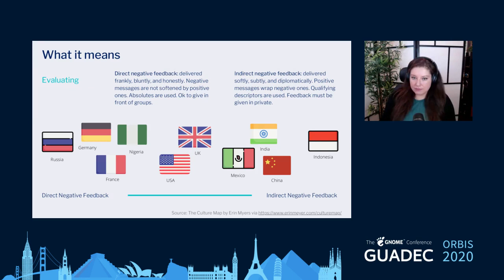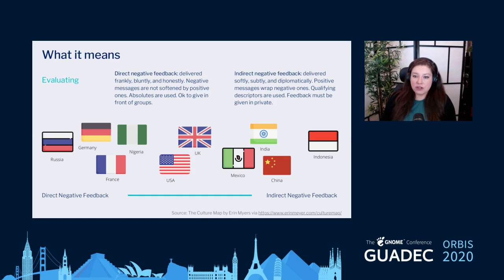Another indicator is evaluating, which is about direct negative feedback. Direct feedback cultures value delivering feedback frankly, bluntly, and honestly. They don't soften negative messages with positive ones, and absolutes are often used — phrases like 'you always do this' or 'completely.' Negative feedback is also seen as acceptable in front of groups, not always done in private.